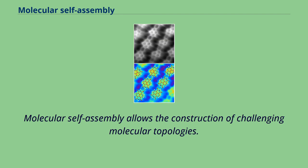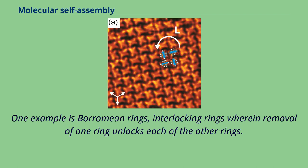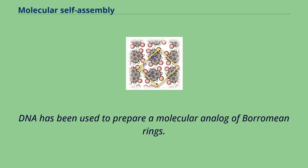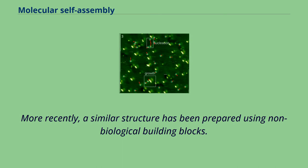Molecular self-assembly allows the construction of challenging molecular topologies. One example is Borromean rings — interlocking rings wherein removal of one ring unlocks each of the other rings. DNA has been used to prepare a molecular analog of Borromean rings, and more recently a similar structure has been prepared using non-biological building blocks.